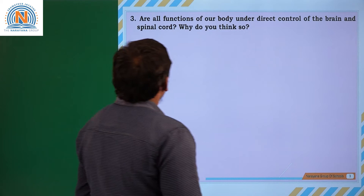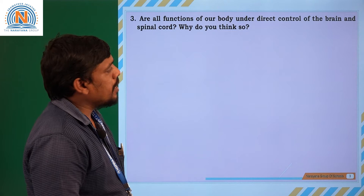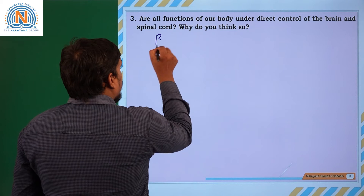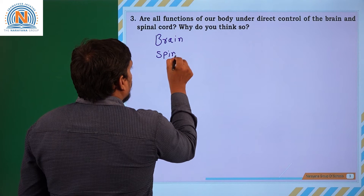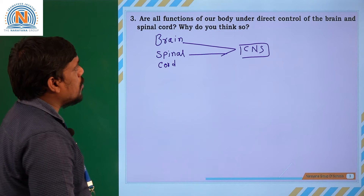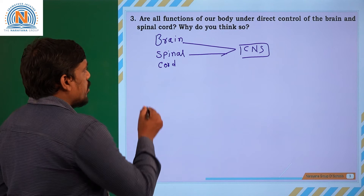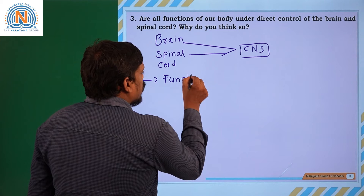Third question: Are all functions of our body under the direct control of the brain and spinal cord? Why do you think so? The brain and spinal cord together form the central nervous system. The central nervous system is responsible for direct control of certain actions in our body, and all bodily functions and movements are under the direct control of the central nervous system.